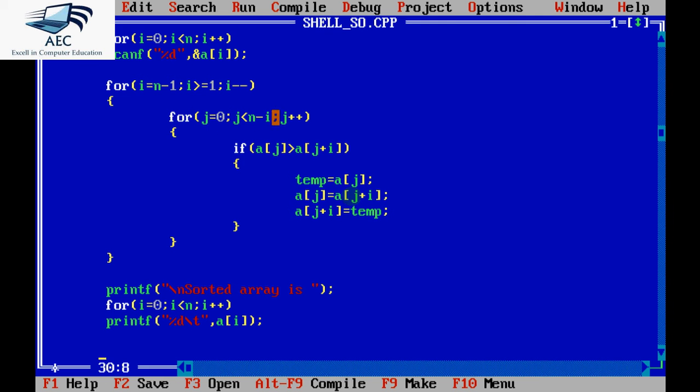j less than n-i. And we compare here a[j] with a[j+i]. So whenever the condition is true, values will be interchanged. If it is false, they won't be interchanged. So as we just discussed, the loops will work in the same way and your array would get sorted. And at the end, we are printing the sorted array.